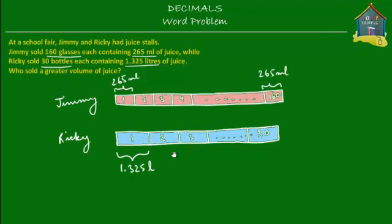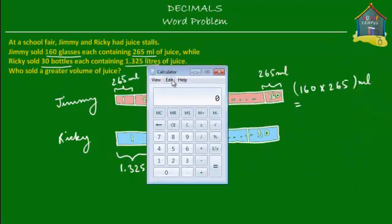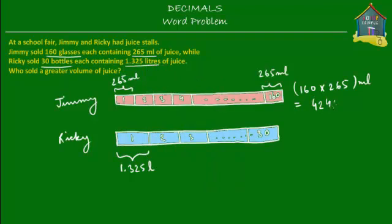Here is the model — let's find out what each block is equal to. If Jimmy sold 160 glasses each containing 265 milliliters of juice, then the total volume he sold is 160 times 265 milliliters. Let's use a calculator. 160 times 265 milliliters equals 42,400. So this pink block is equal to 42,400 milliliters.